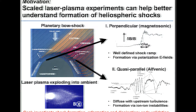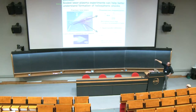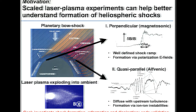The laser plasma acts as a piston moving at super-Alfvénic speed into a preformed ambient plasma, which is stationary — analogous to the magnetosphere in the shock frame. The convenient thing about the experiment is we can change the orientation of the laser plasma relative to the magnetic field, so we can study both magnetosonic and Alfvénic shock waves. My talk is split in two parts: first the perpendicular case, then the parallel case.